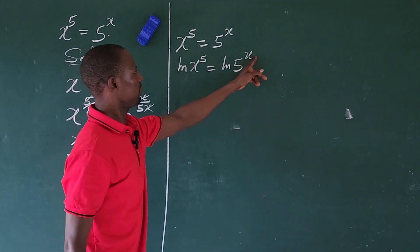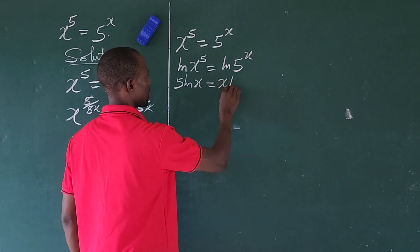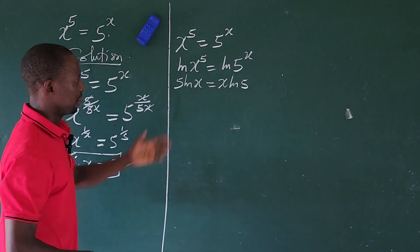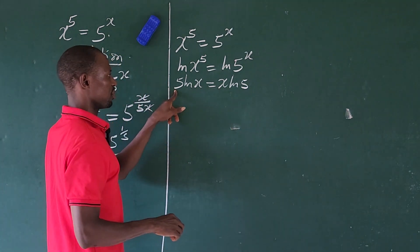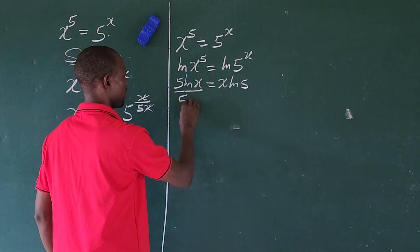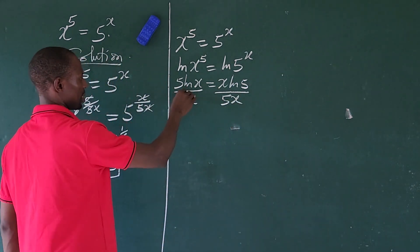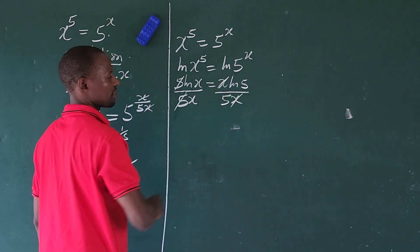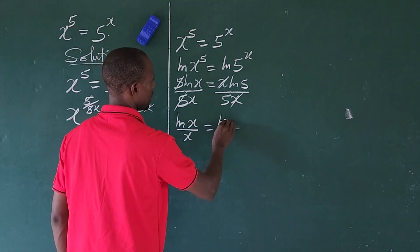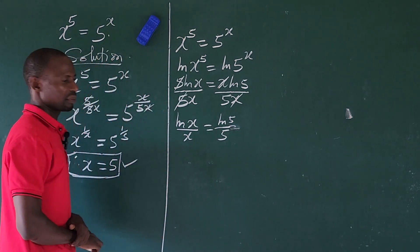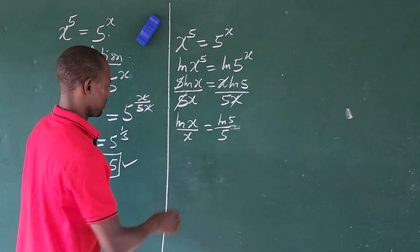Moving the exponents out according to the law of logarithms, we have 5·ln(x) equals x·ln(5). Now I want to divide through by x and also by 5 — that is, divide by 5x. The x's and 5's cancel respectively, leaving us with ln(x)/x equal to ln(5)/5.